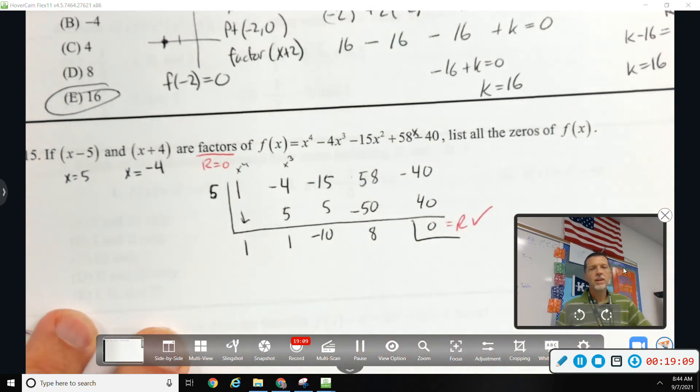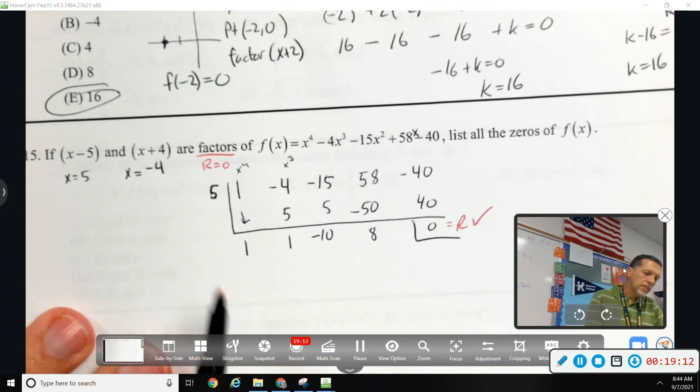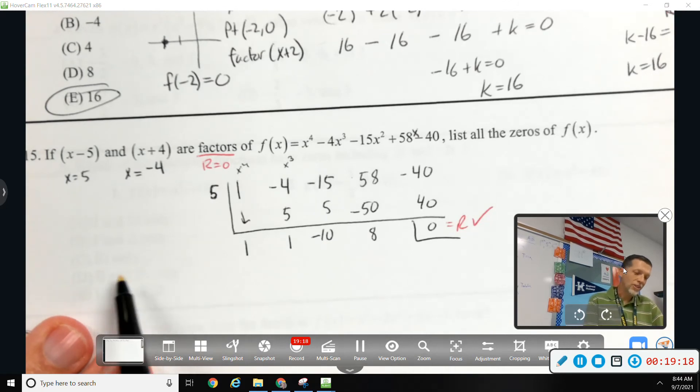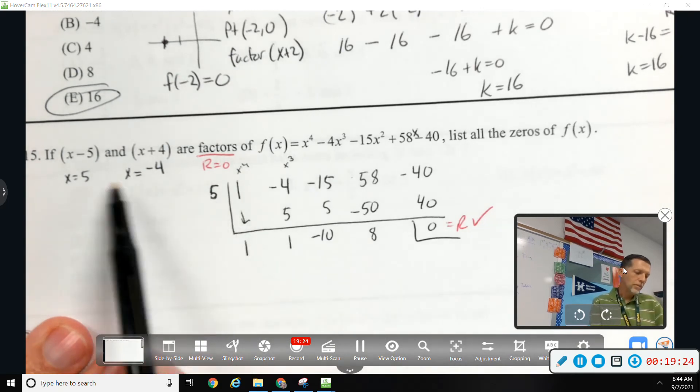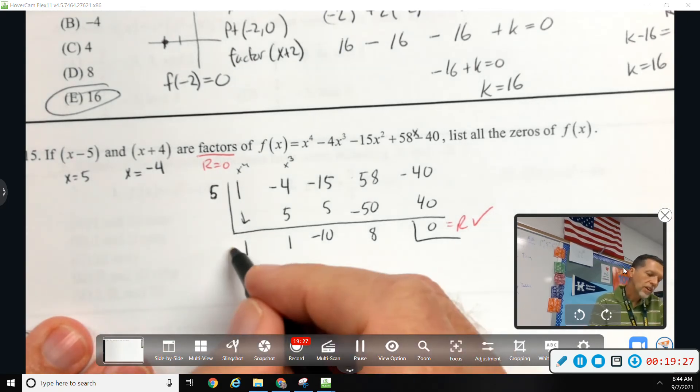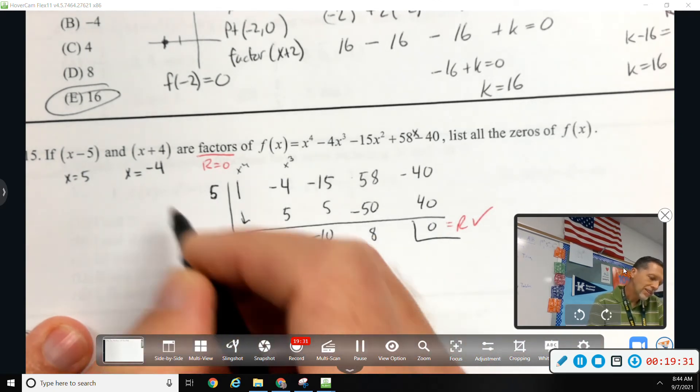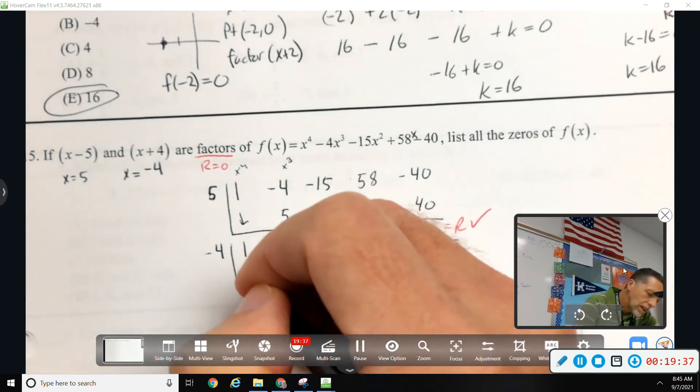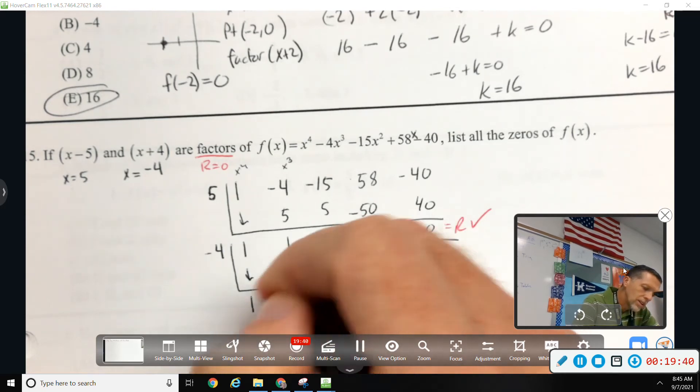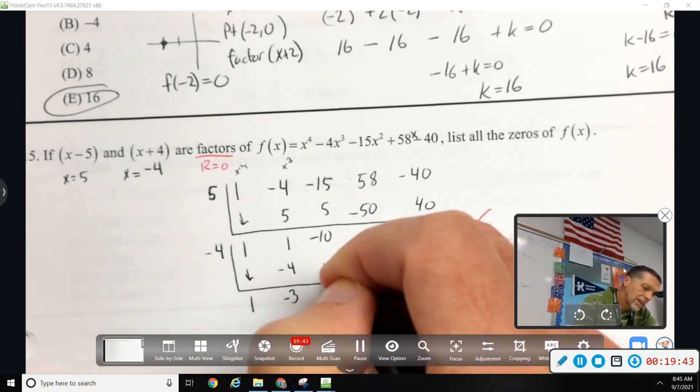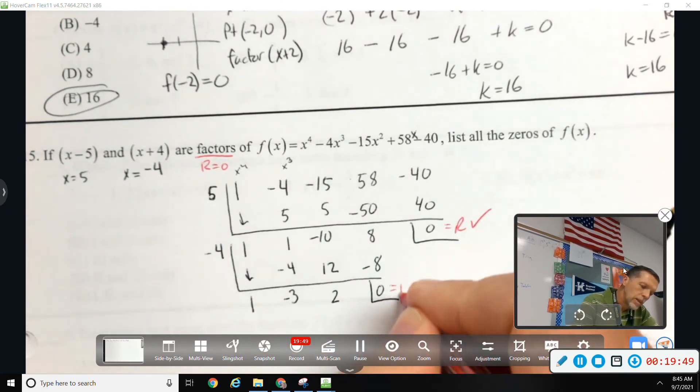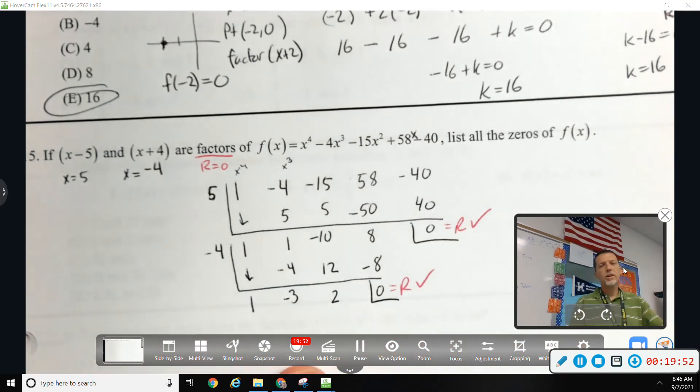All right, we got 0 for the remainder, so that's good. I mean, we knew we should, but this gives us a set of reduced coefficients, or sometimes they're called depressed coefficients, which sounds kind of depressing, I guess, but we found one factor, so this is an easier set of coefficients to deal with. So, off of that set, now we'll use negative 4, and we should get 0 again. Bring down the 1, multiply, add, multiply, add, multiply, multiply, add, good work. We got 0 for the remainder again.